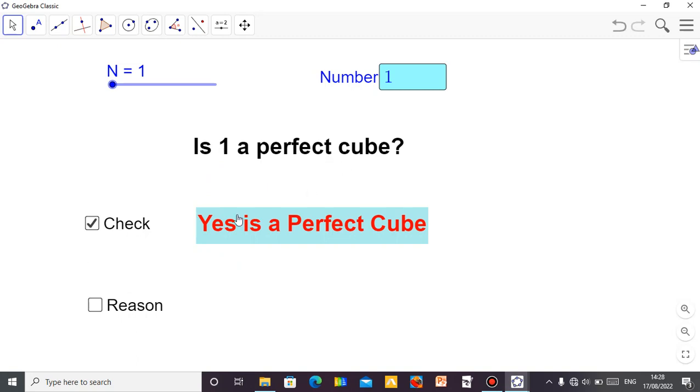So you can see 1 is a perfect cube because 1 times 1 times 1 is 1. Yes, it's a perfect cube. You can see it right there.